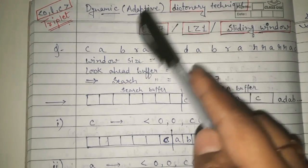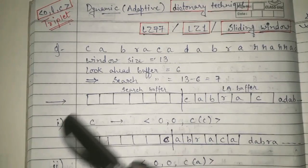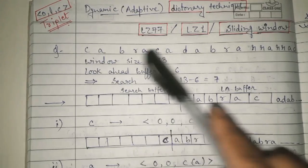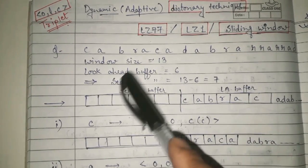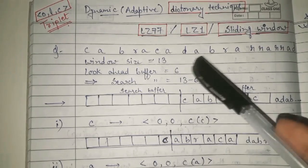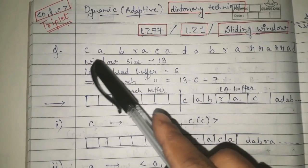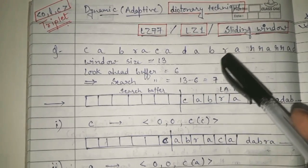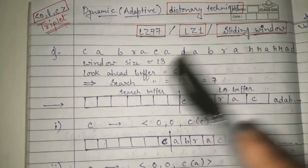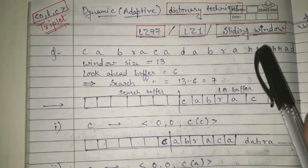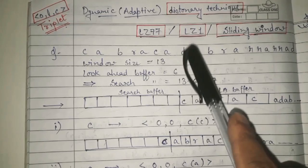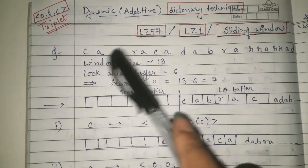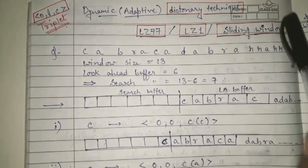Let's see how to apply LZ77 with an example. The given sequence is: C A B R A C A D A B R A R R A R R A R R A D. We are expected to encode this sequence with the help of the LZ77 dictionary technique.